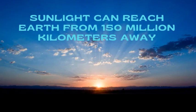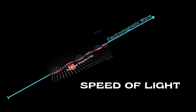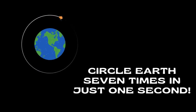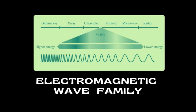Another remarkable feature is its speed. In vacuum, electromagnetic waves travel at the fastest speed possible in the universe, about 300,000 kilometers per second. That is fast enough to circle the Earth seven times in just one second. Light is just one part of the electromagnetic wave family.